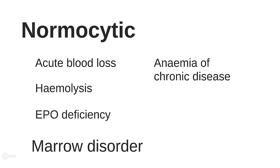Causes of normocytic anemia include acute blood loss. Chronic blood loss is associated with microcytic anemia caused by iron deficiency, but in acute blood loss nothing is different about the size of the cells — there are just fewer of them. Anemia of chronic disease is another cause, and that can be microcytic or normocytic.